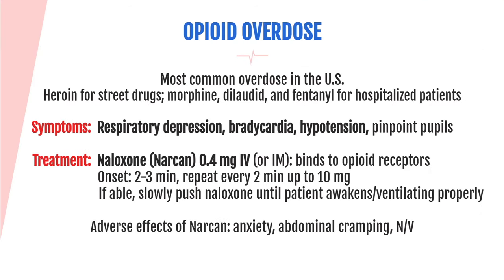Opioid overdoses are the most common overdose in the U.S. The drug most commonly overdosed on the streets is heroin; for hospitalized patients, it is morphine, dilaudid, and fentanyl. Symptoms of opioid overdose include respiratory depression, bradycardia, hypotension, and pinpoint pupils. You want to know if the patient is ventilating appropriately — capnography tells you this, not SpO2, because SpO2 is a late sign of hypoventilation.